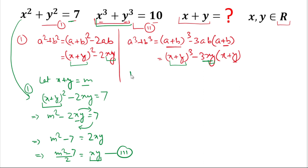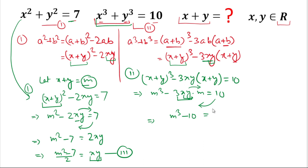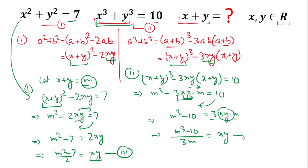Now from equation 2, substituting x+y = m: (x+y)³ - 3xy(x+y) = 10 becomes m³ - 3xy·m = 10. Rearranging, m³ - 10 = 3xy·m, so dividing both sides by 3m gives xy = (m³ - 10) / (3m). We label this equation 4. We now have two expressions for xy.